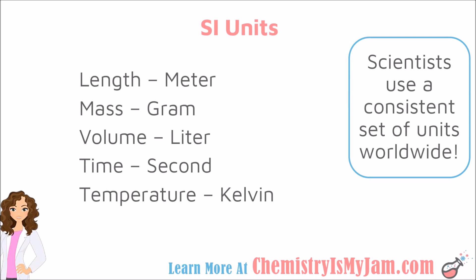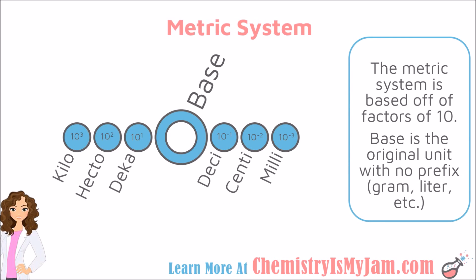Let's talk some more about some of these other units that we see in the international system of units. These units like meter and gram and liter are considered the base units for the metric system. The metric system is based off of factors of 10. You have base units where there is not a prefix present, like the gram and the meter, and then you have prefixes that indicate the factor of 10 that your number has been shifted by.